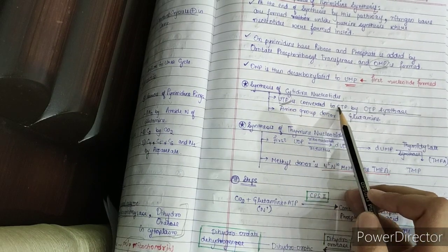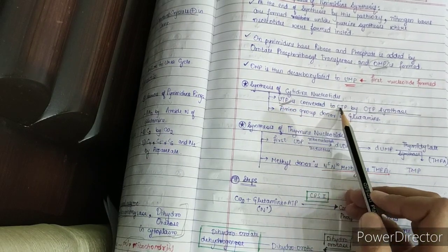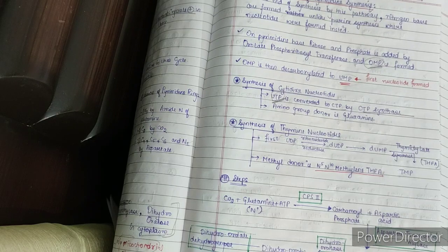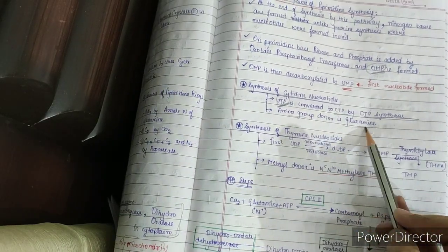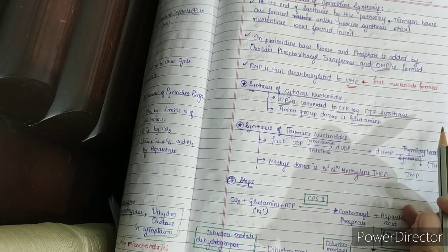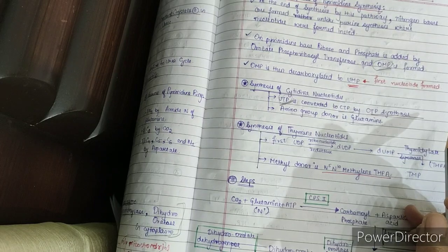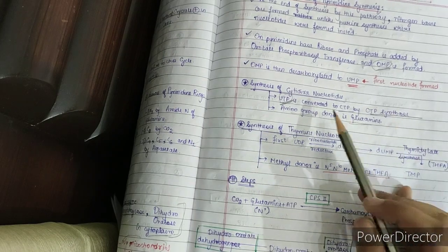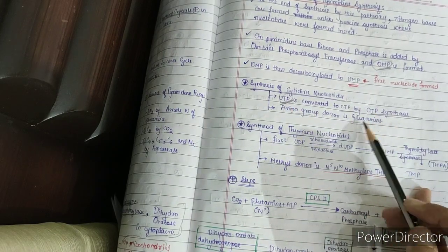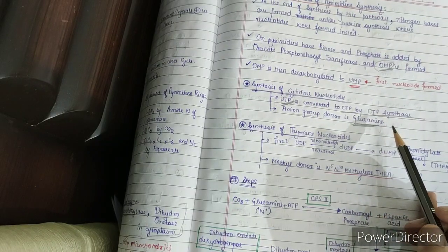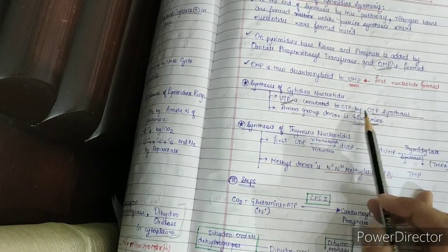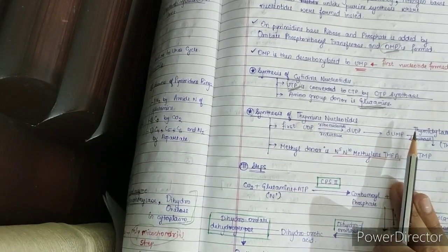The difference between UTP and CTP is an additional amino group in cytosine — deamination of cytosine gives uracil. This additional amino group is provided by glutamine. To compare: for AMP synthesis from IMP, the amino group donor is aspartic acid; for GMP synthesis, it is glutamic acid; and for conversion of UTP to CTP, glutamine is the amino group donor.